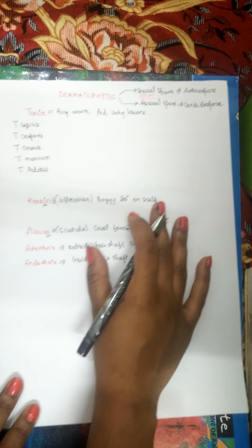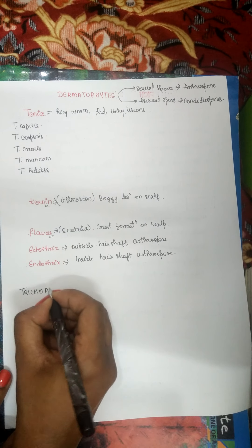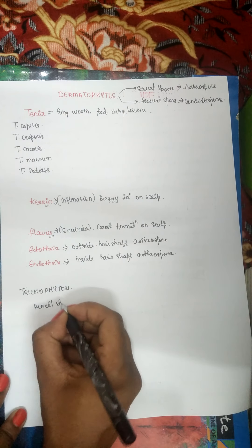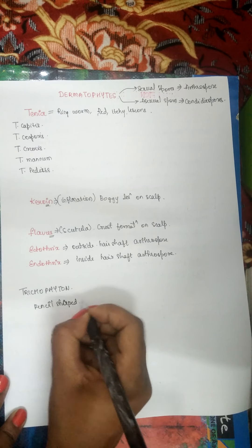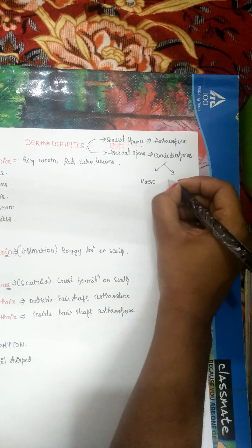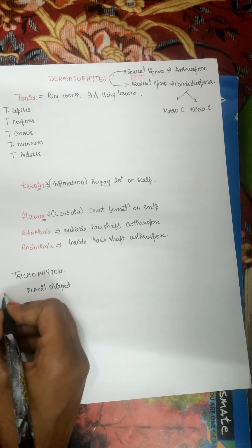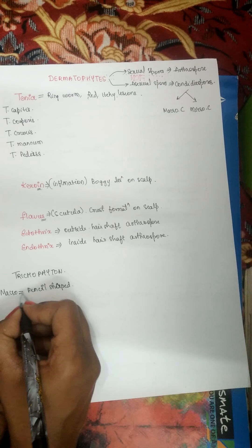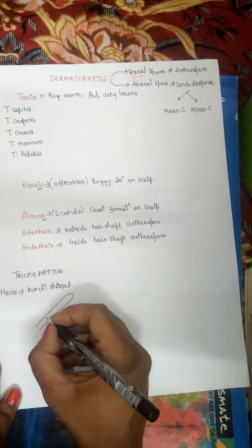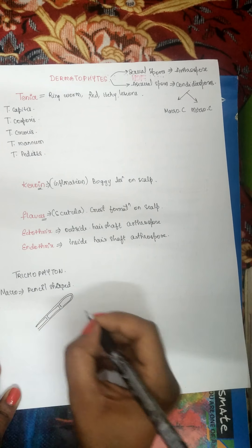You should remember the various shapes of macroconidia. Conidia are of two types: macroconidia and microconidia. For Trichophyton, macroconidia are pencil-shaped — thin, slender, and branched.